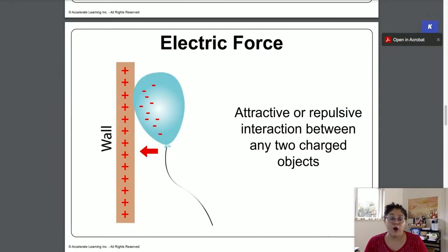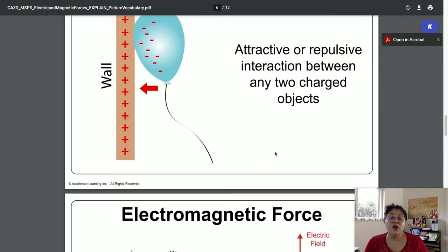An electric force is something that attracts or repulses between two charged objects. So some things can have a positive charge on them, like this wall, and if you rub a balloon, it can get a negative charge, and they are attracted to each other. But if they both have a positive charge or both have a negative charge, they will repel each other. And so an electric force is the attraction between two charged objects, two things that aren't charged.